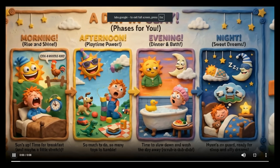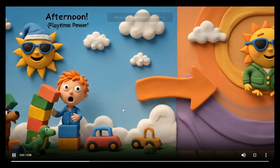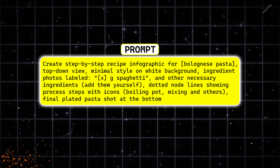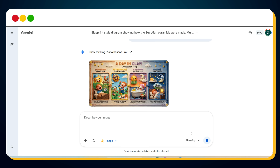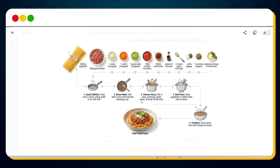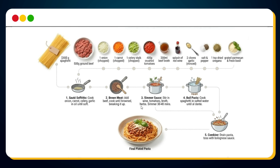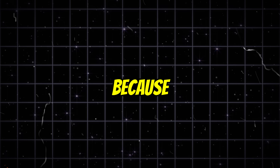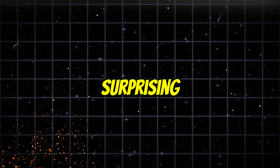This is super clean, super fun, super engaging for kids. And that's not all. If you use this prompt and hit the send button, Nano Banana Pro instantly generates a beautiful recipe infographic like this — all ingredients labeled perfectly, each cooking step visualized with clean icons, and a final plated pasta shot at the end. Now let's move to use case number five, because the next one is even more surprising.